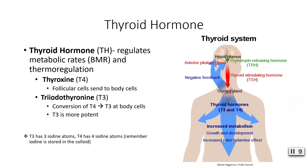Thyroid hormone is your main metabolic hormone. It regulates your basal metabolic rate, your BMR, and assists with thermoregulation. Thyroid hormone comes in two forms: thyroxine, which is T4, and comes from the follicular cells. The T4 is sent out to your body, where cells convert it to triiodothyronine, T3. T3 is more potent than T4.